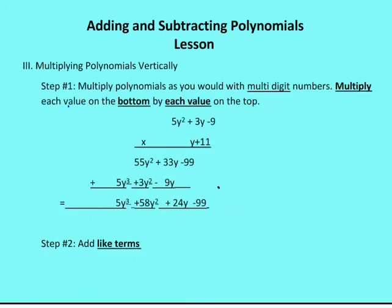Now, multiplying polynomials. There are two ways to multiply polynomials — vertically or horizontally — and we're going to go through each of the steps. I have 5y squared plus 3 minus 9 times y plus 11. You handle this the same way you would in elementary school: line up the values you are multiplying together, then create a product below the line. There's no carrying — you just multiply the terms and then add them together.